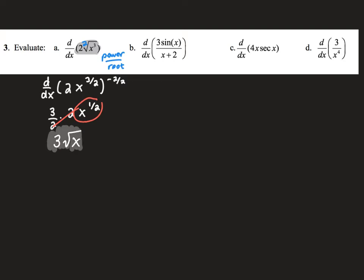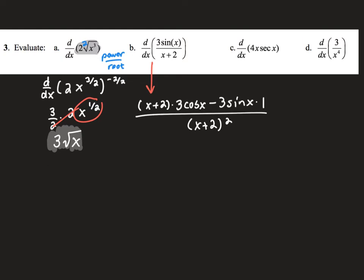The next question has a quotient, which means I'll use the quotient rule. I take the bottom function as is, times the derivative of the top — the derivative of 3 sine x is 3 cosine x — minus the top function times the derivative of x plus 2, which is just 1, all over that bottom function squared. Make sure you include that minus sign in the quotient rule. There's not much simplification I can do here, so I'll leave it as is.